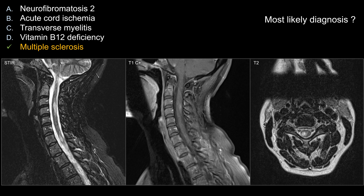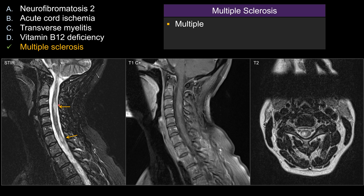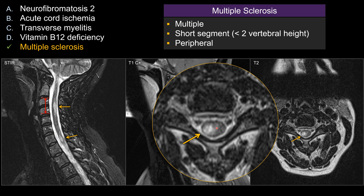The correct diagnosis is choice E, multiple sclerosis. Let's look at some of the image features to make MS the best choice among these five answers. The lesions are in the periphery of the spinal cord rather than central. As you remember, the periphery of the cord is where the white matter is, and the central is gray matter — kind of a flip of what you see with brain MR. So: multiple lesions, short segment, peripheral in location — that is fairly classic for an MS lesion.